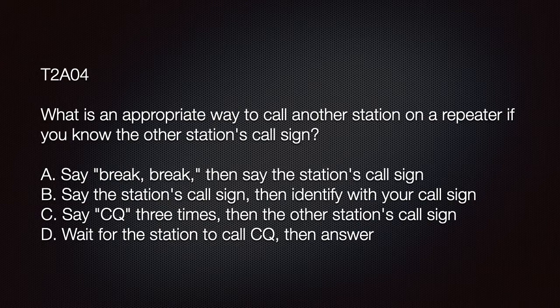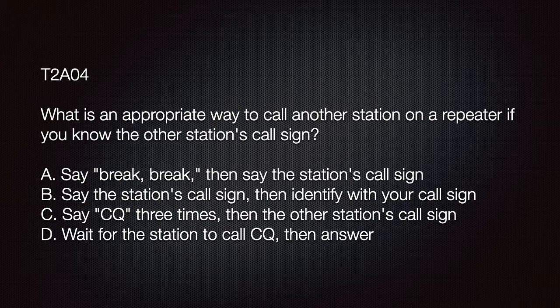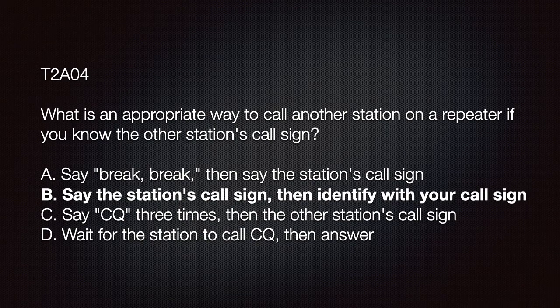The exam question is: What is the appropriate way to call another station on a repeater if you know the other station's call sign? A: Say break break then the station's call sign; B: Say the station's call sign then identify with your call sign; C: Say CQ three times then the other station's call sign; or D: Wait for the station to call CQ then answer. The correct answer is B.